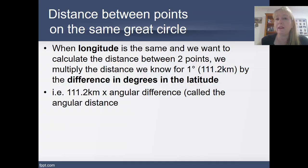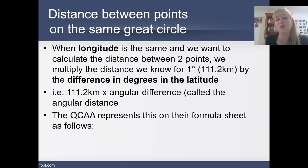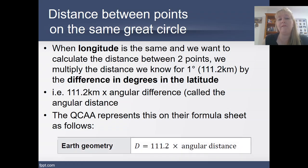Which means they are an angle from the center of the earth. So that angle of latitude, we're going to calculate the difference between those and multiply them by this number 111.2. And this looks like this on our formula sheet here. The distance equals 111.2 multiplied by that angular distance, also called an angular difference.